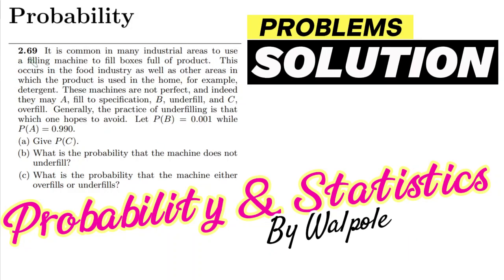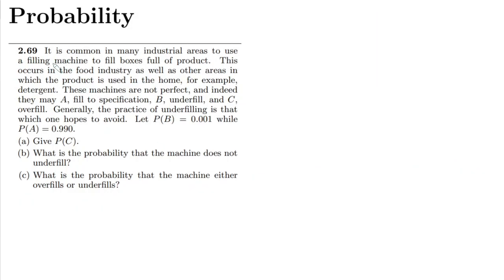This is question 2.69. The statement is: it is common in many industrial areas to use a filling machine to fill boxes full of product. This occurs in the food industry as well as other areas in which the product is used in the home, for example detergent. These machines are not perfect and indeed they may be: a) fill to specifications, b) underfill, and c) overfill.